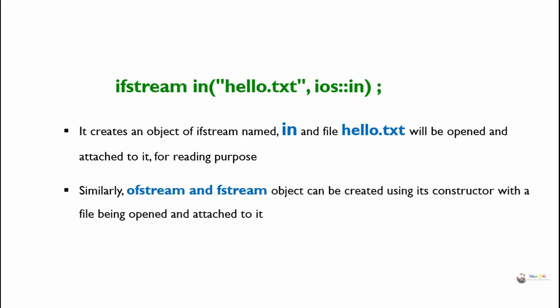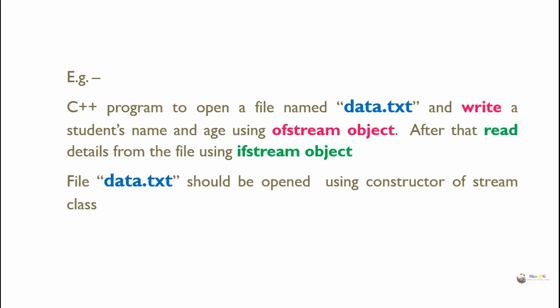Similarly, ofstream and fstream objects can be created using their constructor with a file being opened and attached to it. As an example, consider a C++ program to open a file named data.txt and write a student's name and age using an ofstream object, and then read details from the file using an ifstream object. The file data.txt should be opened using the constructor of the stream class.